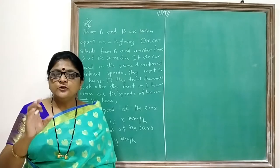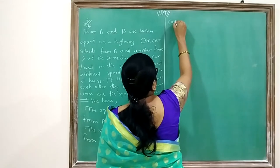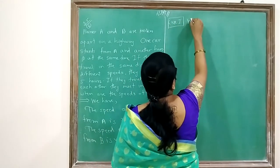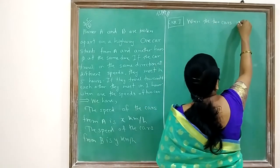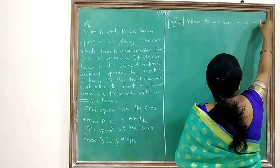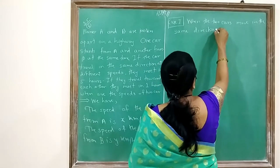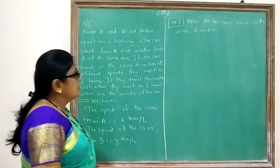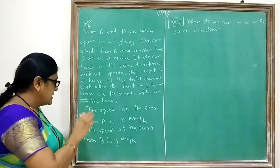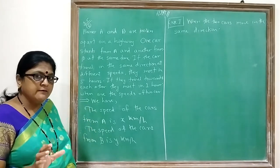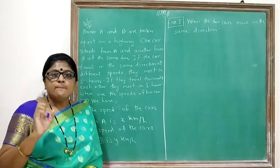Case 1: When the two cars move in the same direction. Car A's speed is X km per hour, car B's speed is Y km per hour, and the time is 5 hours.